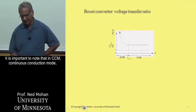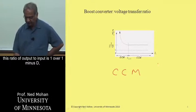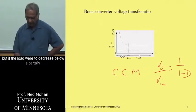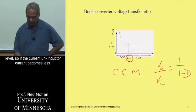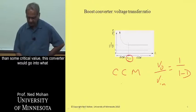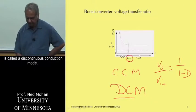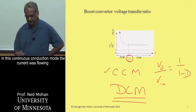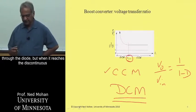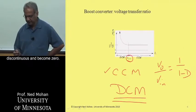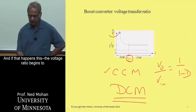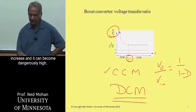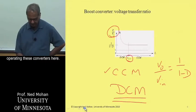It's important to note that in CCM, continuous conduction mode, this ratio of output to input is 1 over 1 minus D. But if the load were to decrease below a certain level, so if the inductor current becomes less than some critical value, this converter would go into what is called a discontinuous conduction mode. That means during the off interval of the transistor, in the continuous conduction mode, the current was flowing through the diode, but when it reaches the discontinuous conduction mode, that current can become discontinuous and become zero. So if that happens, the voltage ratio begins to increase, and it can become dangerously high. So one has to be very careful in operating these converters.